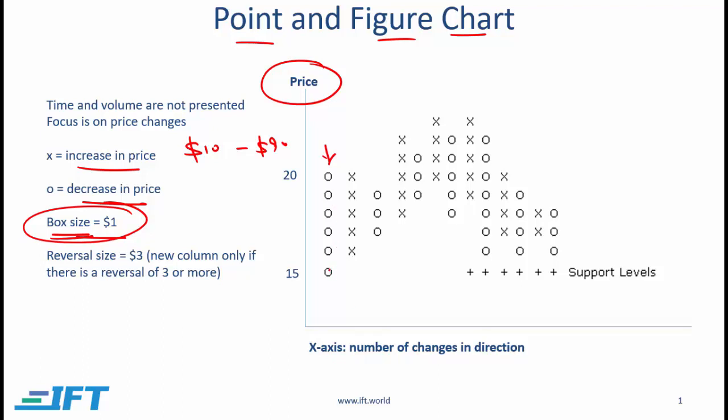If there is a reversal, then we add a new column. Now a reversal has to be defined. In our case when the box size is $1, typically a reversal size is $3.